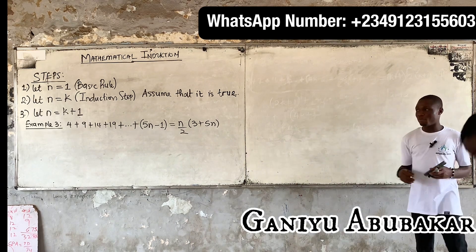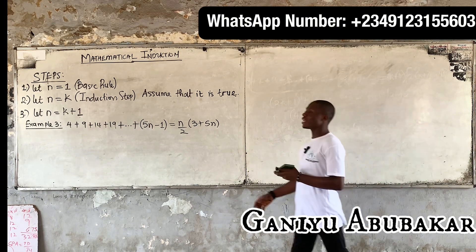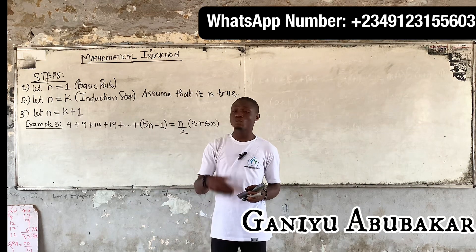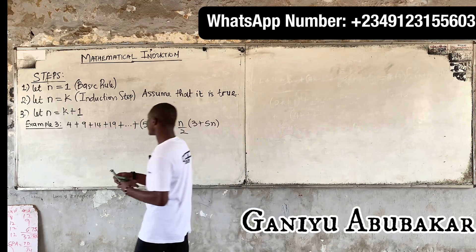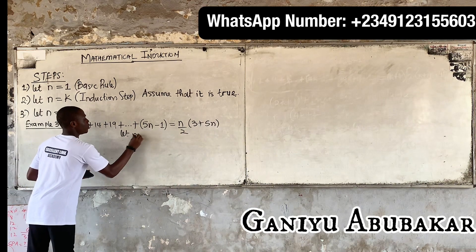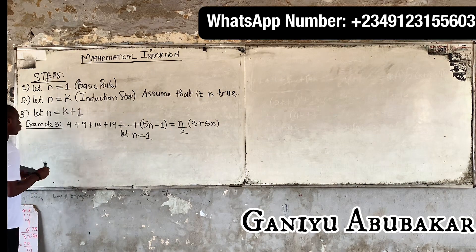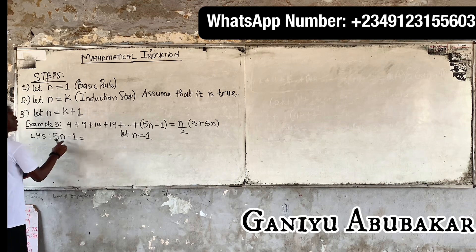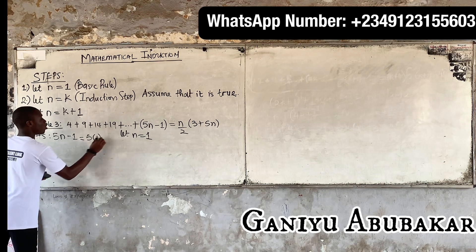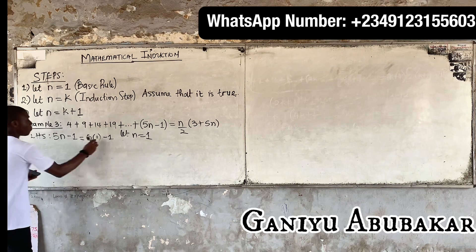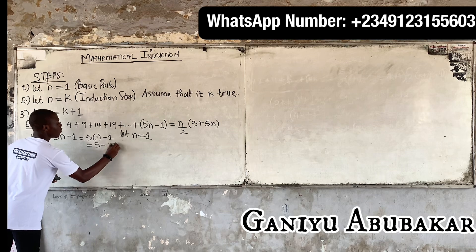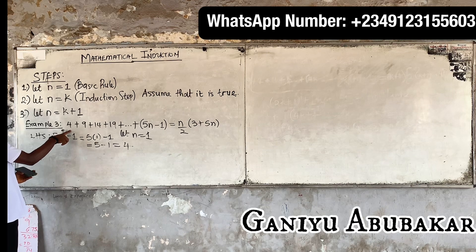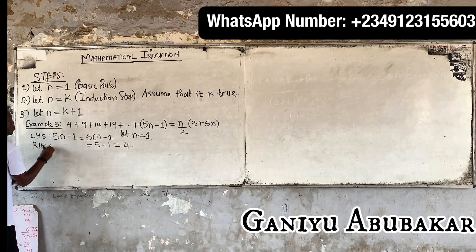Alright, let's do Example 3. When it comes to induction, the first step is to let n equal to one. If n is one, go to your left hand side — what do we have there? Five n minus one. Put n as one: we get five times one minus one, which gives us five minus one, which is four.